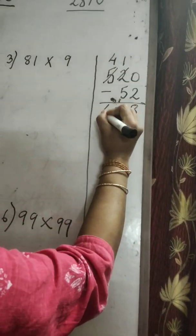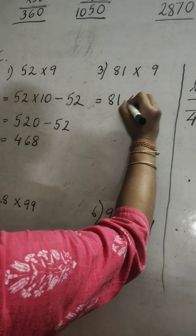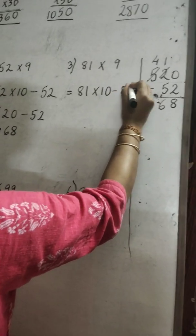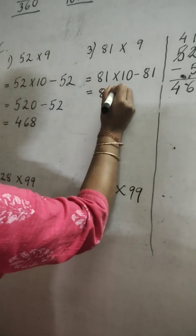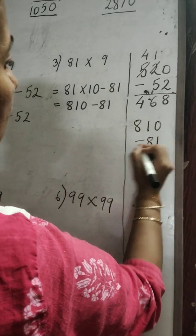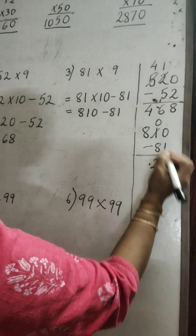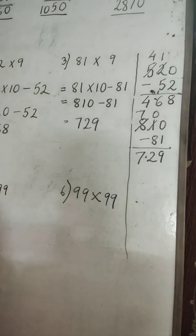Another example: 81 into 9. First, 81 multiplied by 10 gives 810. Then subtract 81 from 810. Ten minus one is nine. What remains here — zero. Ten minus eight is two, so seven. The answer is 729.